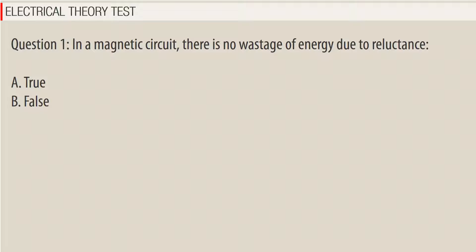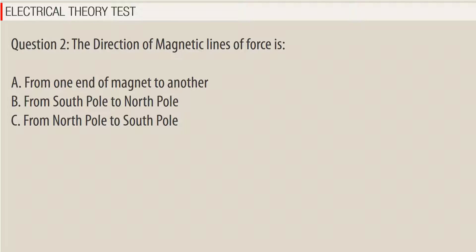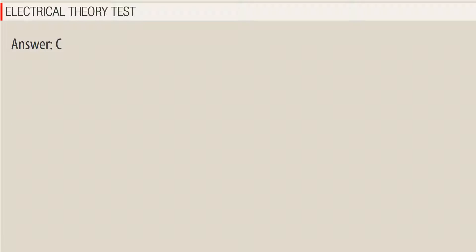Question 2. The direction of magnetic lines of force is? a. From one end of magnet to another. b. From south pole to north pole. c. From north pole to south pole. Answer: C.